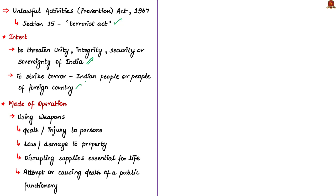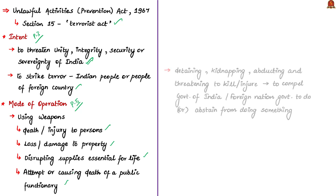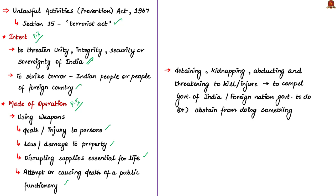The second part talks about the use of weapons such as bombs and explosive substances to cause death or injury to persons, loss or damage to public or private property, disrupting essential supplies for the life of people, or attempting to cause or causing the death of a public functionary — meaning constitutional authorities and any other functionary notified in the official gazette by the central government. The act also includes detaining, kidnapping and abducting any person and threatening to kill them so as to compel the Indian government or a foreign government to do or abstain from doing a particular act.